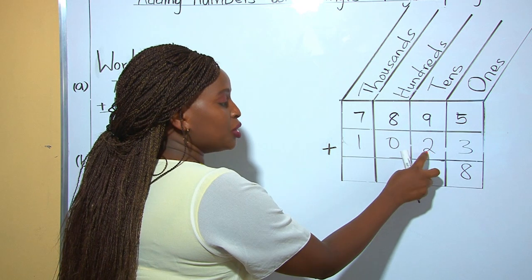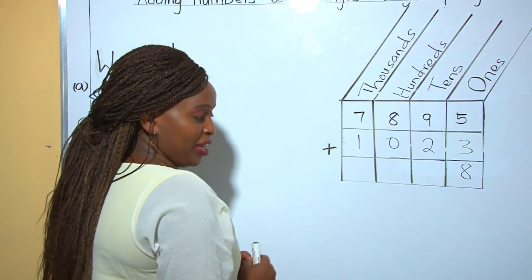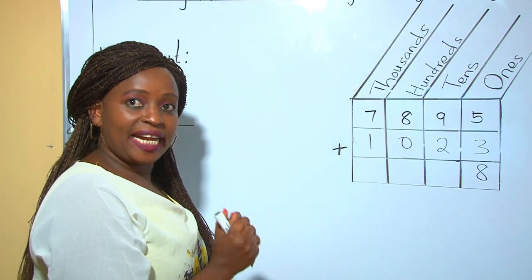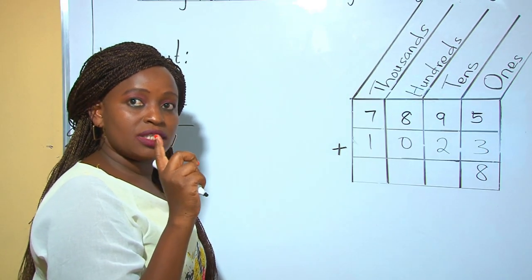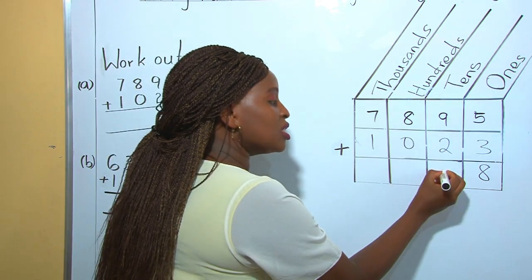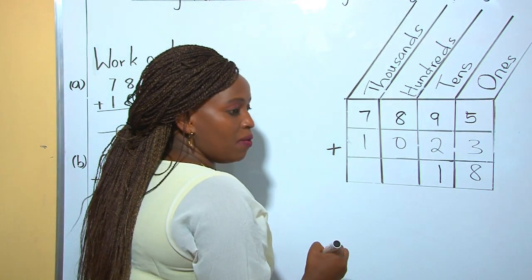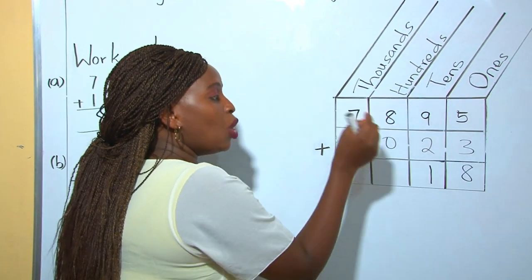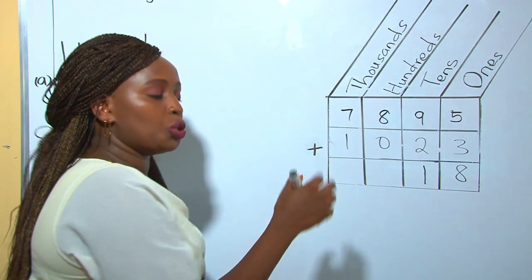9 plus 2 is 11. These are 11 tens. 10 tens make 100. Therefore, when we list it down, we write one ten from the 11, and the other 10 tens we regroup into 100.